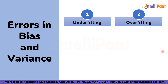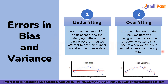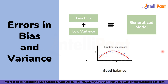These are the two errors in bias and variance: underfitting and overfitting. Underfitting happens when a model is unable to capture the underlying patterns of the data — these models have high bias and low variance. It generally occurs when we have very little data or when we try to build a linear model with non-linear data. Overfitting happens when our model captures noise along with the underlying patterns, typically when we train on noisy datasets — these models have low bias and high variance. When a model has low bias and low variance, we call it a generalized model, and these give the best prediction results. We need to find the right balance without overfitting or underfitting.